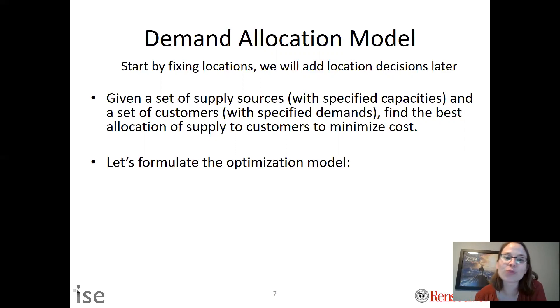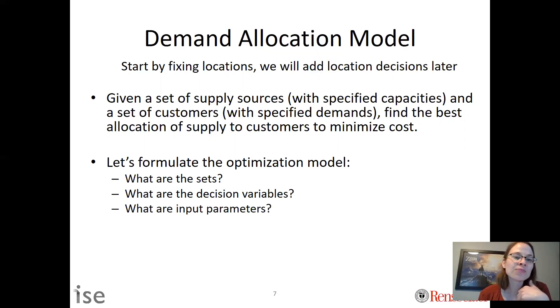Let's formulate this as an optimization model. To do that we have to think about what are the sets—those are the collection of things. What are the decision variables? In this problem it's about allocating resources. What are the input parameters? We have a set of supplies with known capacities and a set of customers with known demands.